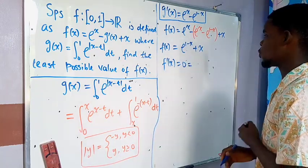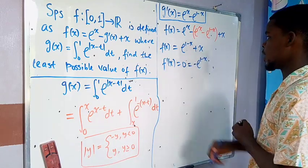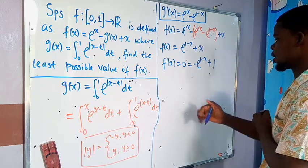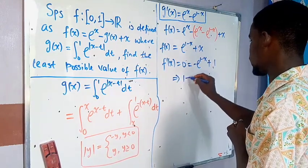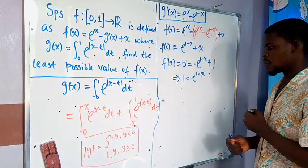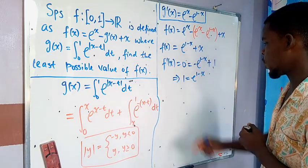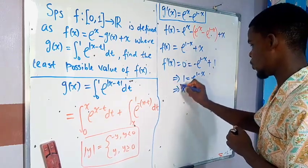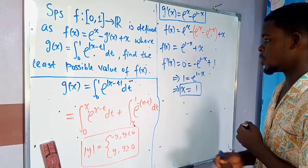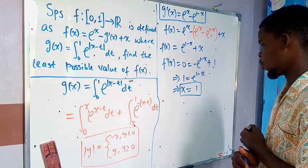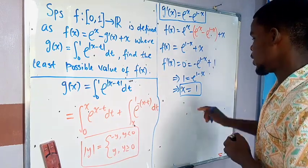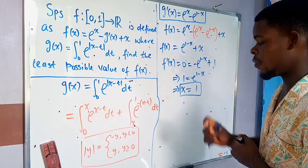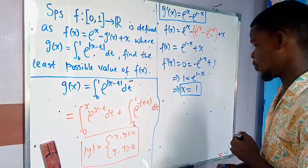Setting negative e to the power of (1 minus x) plus 1 equals 0 means 1 equals e to the power of (1 minus x). Since e to the power of 0 equals 1, the exponent 1 minus x must equal 0, giving us x equals 1. So x equals 1 is the stationary point. We still need to verify whether this gives a minimum or maximum.